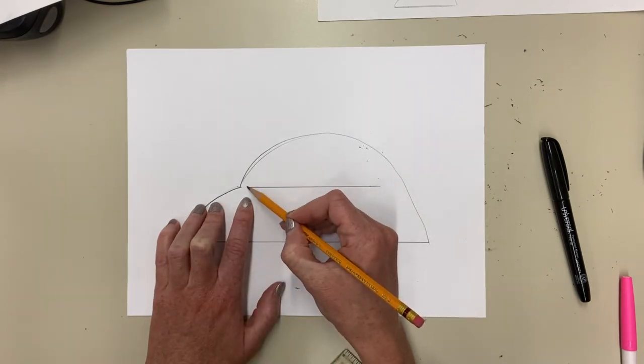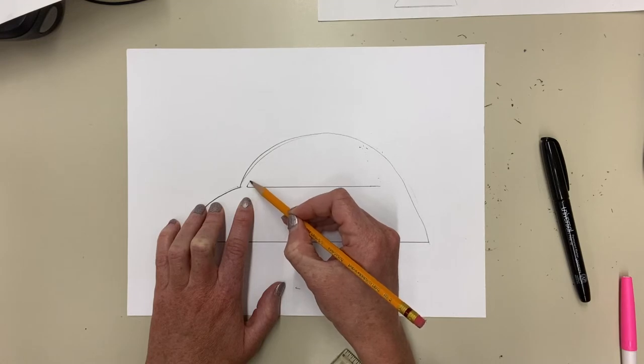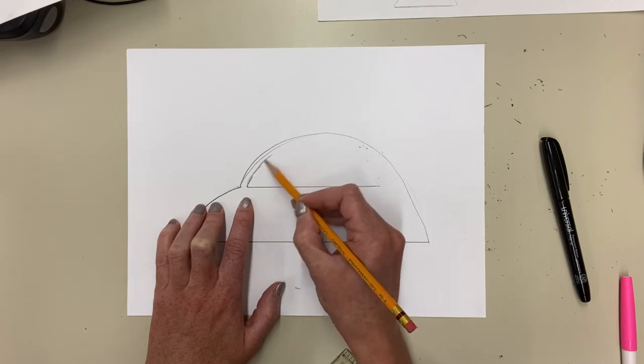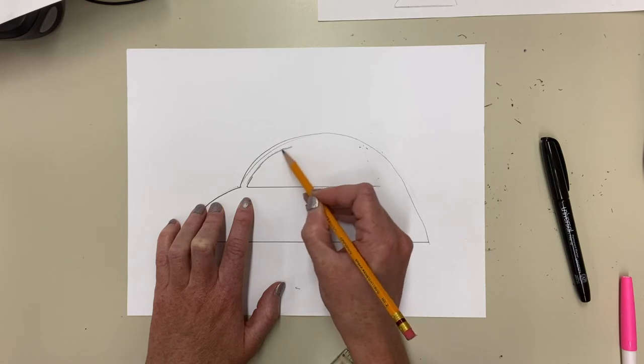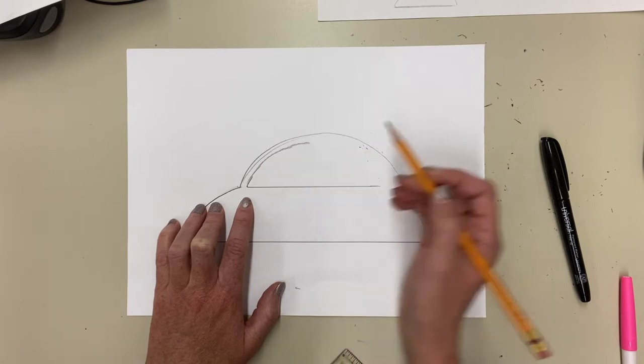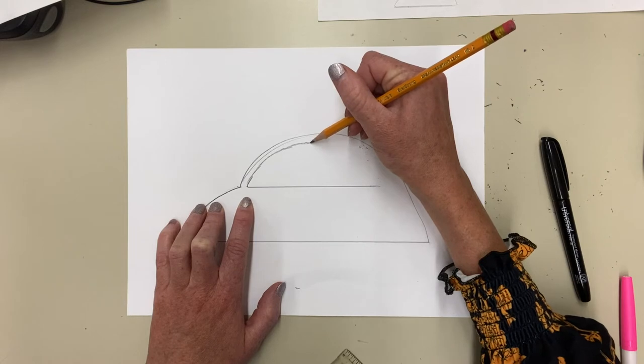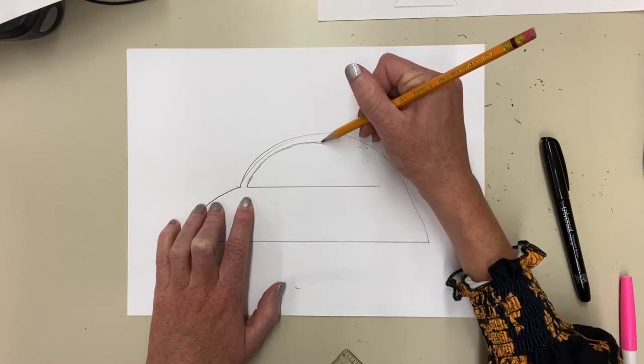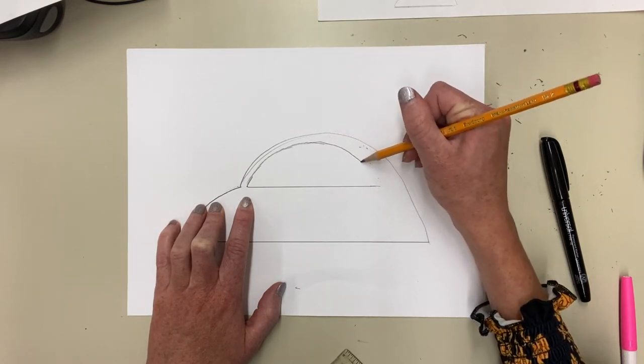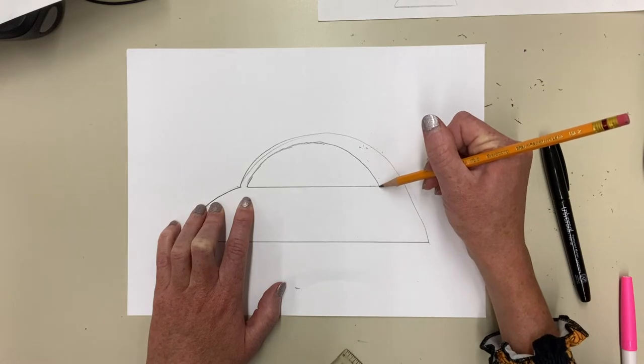I'm going to start up here then I'm going to go up. I'm going to run parallel to that top curve of the car and then as I come around here I'm going to start pulling away a little bit from that top curve of the car and come down and land right there.